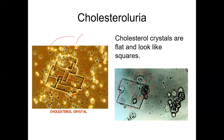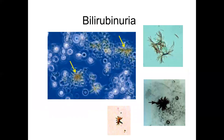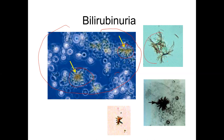This is excess bilirubin in the urine. We do test for bilirubin on the rapid test. This has a one-of-a-kind look — the crystals come in color. This is the bilirubin here; the rest looks like cells, like white blood cells.